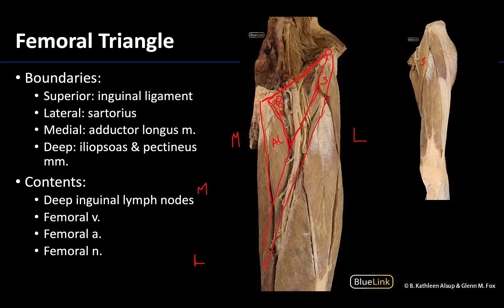Next we have the femoral vein, then the femoral artery, and lastly the femoral nerve. In this particular individual, the nerve has already started to split into branches, but often it appears as just a very large nerve. A mnemonic often used is VAN — vein, artery, nerve — from medial to lateral, helping you understand which structure is most medial and which is most lateral.